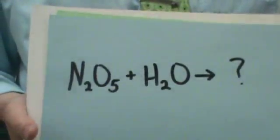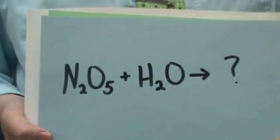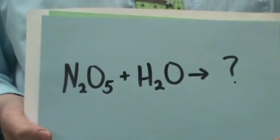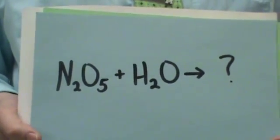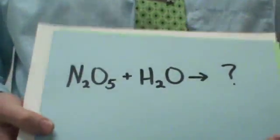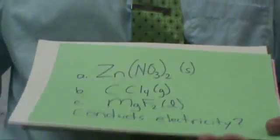What does this make? We make two nitric acid molecules, which we would have to ionize because it's in water. So 2H-plus and 2NO3-minus.